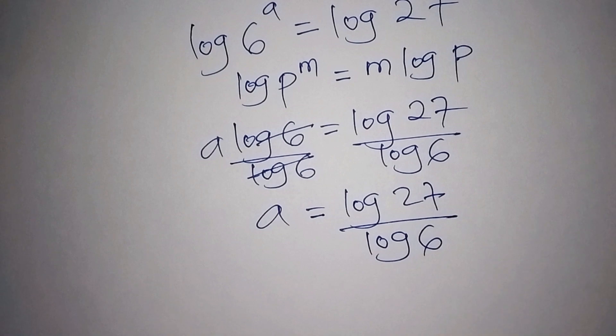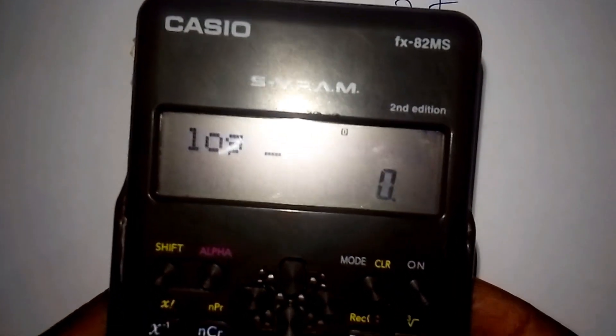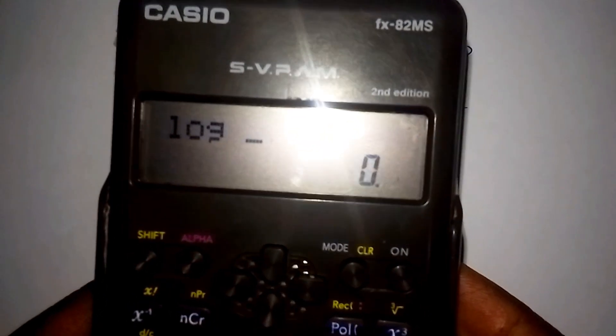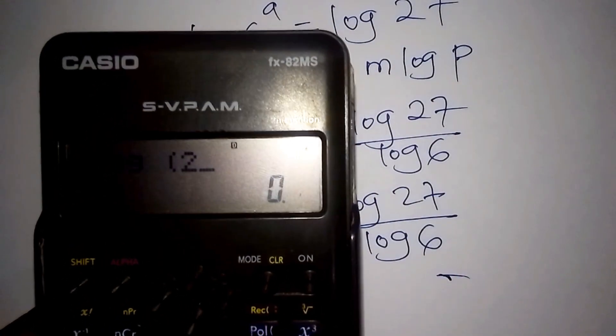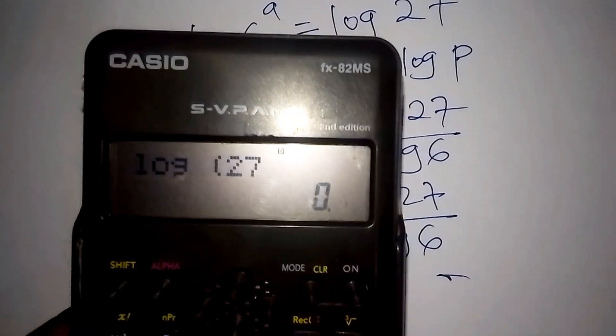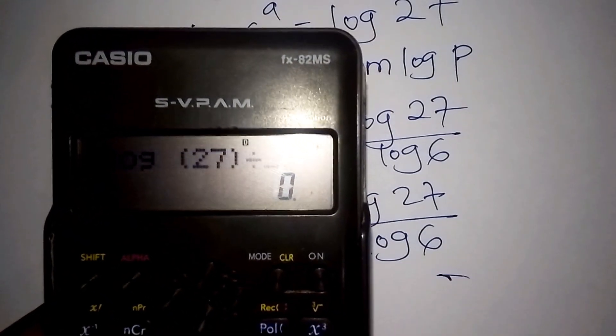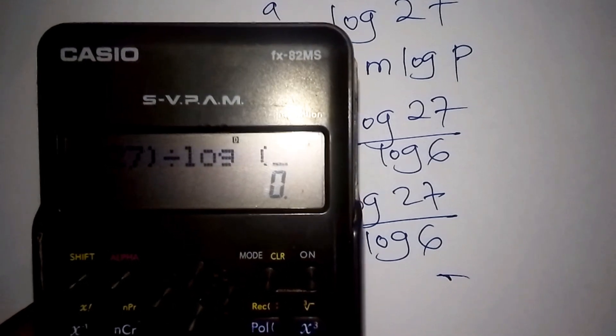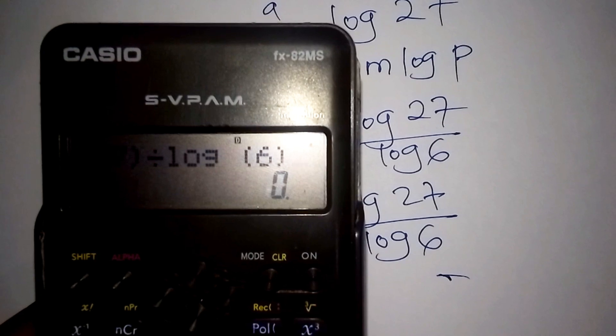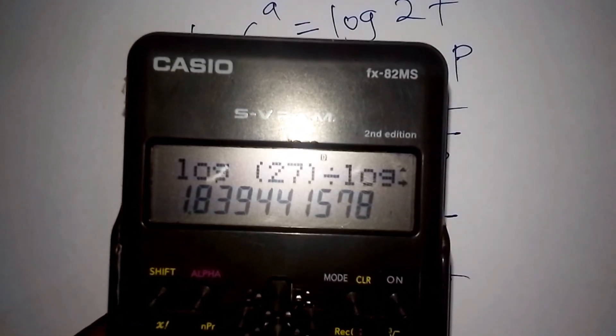So you can work it out directly by the use of the calculator. We shall introduce the calculator by having the log, then we put into bracket, then we indicate the number, that is 27. From there we shall close the bracket, then over means divide by the log of, so into bracket the log of 6, then close the bracket. So now our answer shall be 1.839.